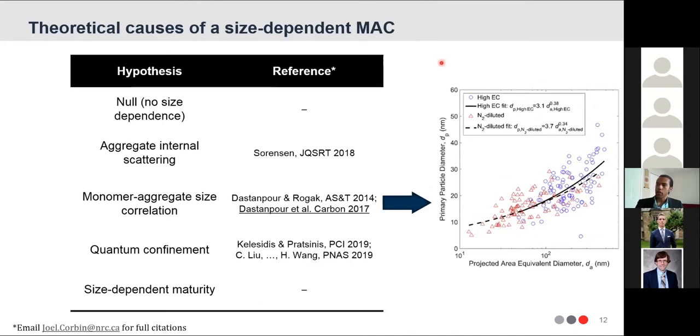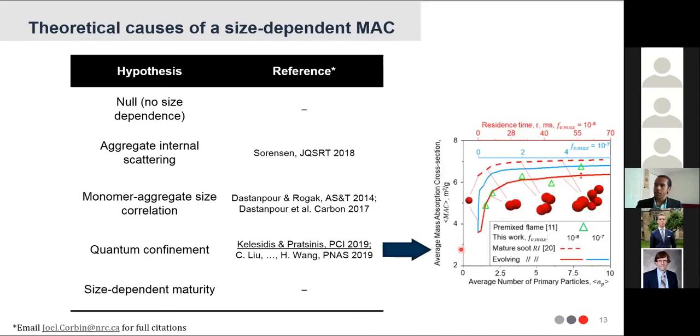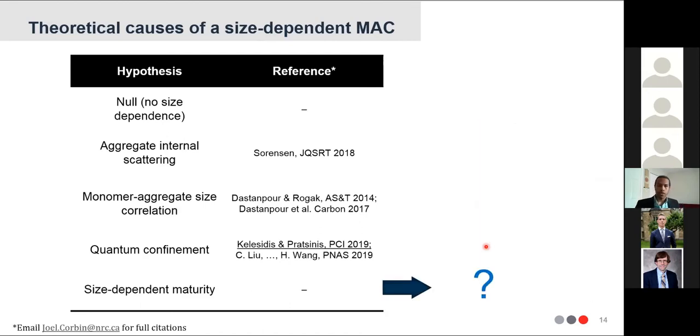Another feature or another hypothesis that we can bring up is a correlation between monomer and aggregate size, which is first reported by Steve Rojak's group. And this was actually measured in that same study that I mentioned that I showed a couple of slides ago. As usual, there was a size dependence observed between primary particle and overall aggregate size. Another hypothesis is quantum confinement, which was first reported by Hai Wang's group, and was parameterized in a nice study by Kilesides and Pratisthenes, where this quantum confinement effect, which boils down to an optical band gap, which is correlated with the aggregate size. So therefore, it can be parameterized with aggregate size, and it results in this kind of trend in this study, which I would plot later in the context of our results. Finally, you could hypothesize that there's a size-dependent maturity to soot, and there is, to my knowledge, no quantitative model of this effect.